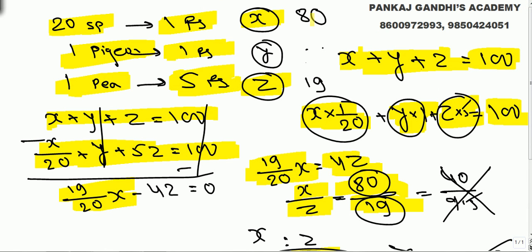We need to buy 80 of this, 19 of this, so only remaining one of this. So total we have got 100 birds and amount will come out properly. Check it quickly.